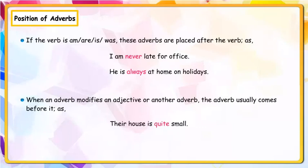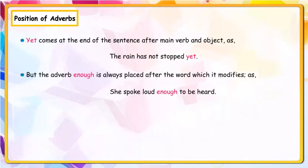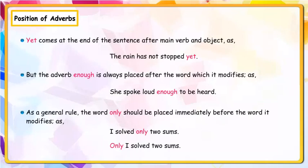When an adverb modifies an adjective or another adverb, the adverb usually comes before it. Examples: Their house is quite small; He plays quite well. 'Yet' comes at the end of the sentence, after the main verb and object: The rain has not stopped yet. But the adverb 'enough' is always placed after the word it modifies: She spoke loud enough to be heard.